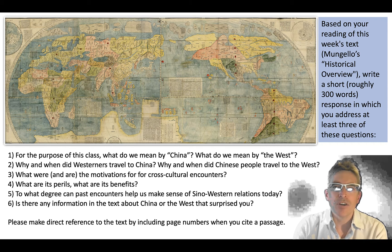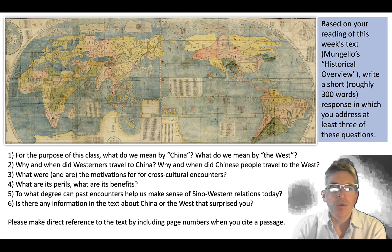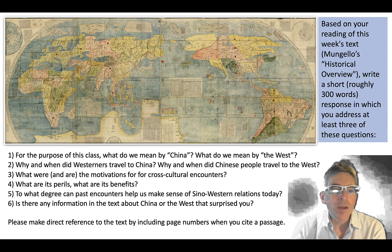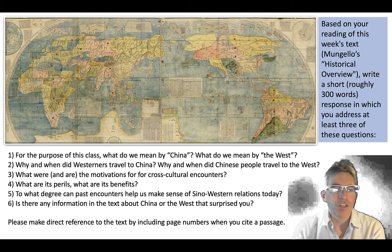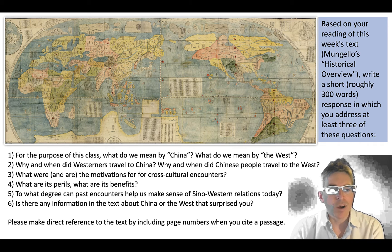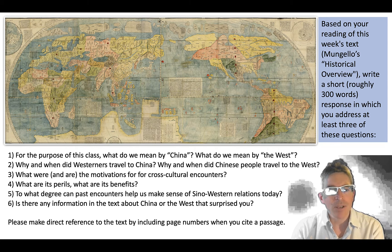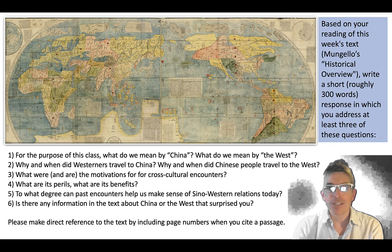To recap the questions for the first reading response: For the purpose of this class, what do we mean by China? What do we mean by the West? Why and when did Westerners travel to China? Why and when did Chinese people travel to the West? What are and were the motivations for cross-cultural encounters? What are its perils? What are its benefits? To what degree can past encounters help us make sense of Sino-Western relations today? And is there any information in the text about China or the West that surprised you? I look forward to reading your first response.